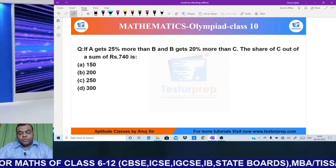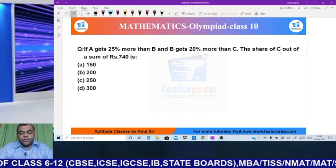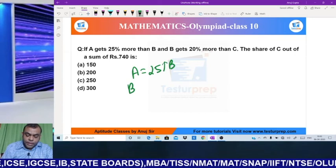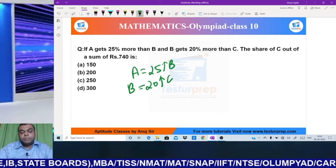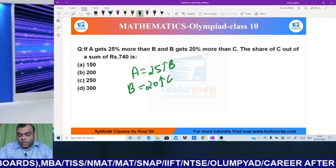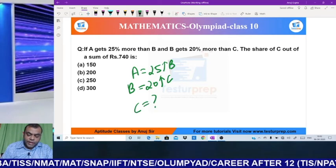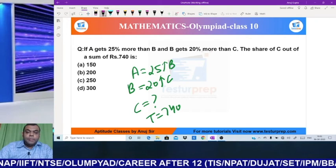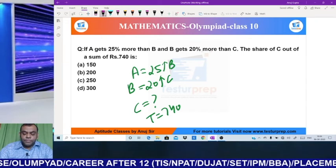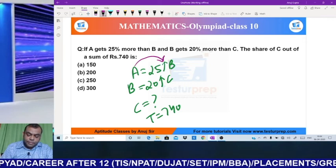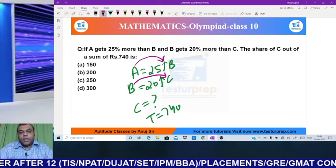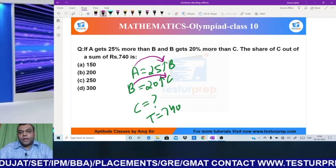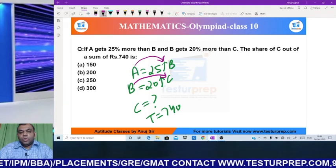Now, my next question is from the topic of percentage. It says A gets 25% more than B. A gets how much extra? 25% more than B. B gets 20% more than C. Then, the share of C out of a sum of 740. So you have to tell C's share if the total given to you is 740. Now again, I won't solve this by an ethical method. I'll give the Olympiad point of view solution. You can see, A depends on B, and B depends on C. A depends on B, B depends on C. So somewhere, A depends on C. I repeat, A depends on B, B depends on C, so A also depends on C.